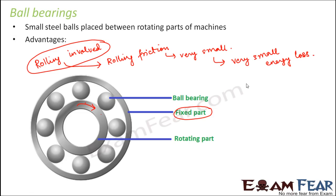Some advantages of using ball bearings are reduced energy loss and reduced wear and tear. When friction is reduced, wear and tear is reduced - because without ball bearings, the two parts would always be sliding against each other, making wear and tear more frequent.